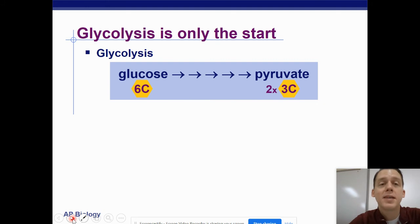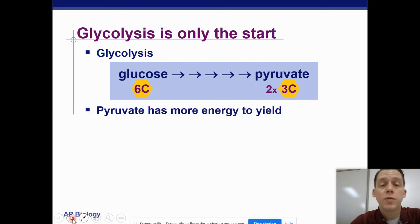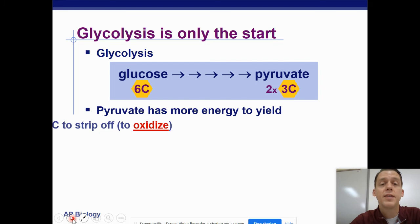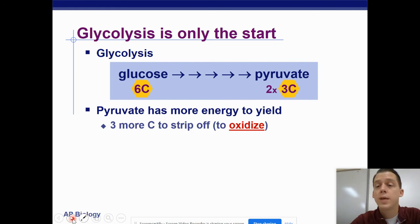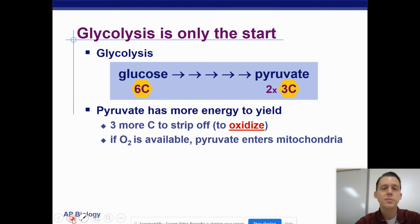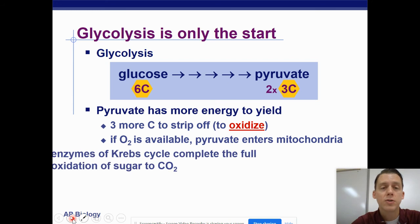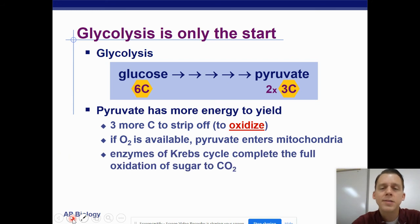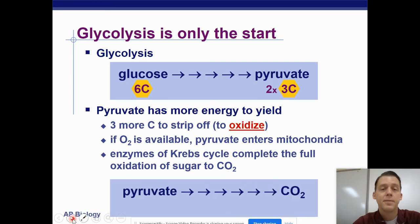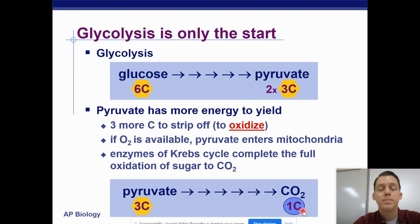Glycolysis has basically turned glucose into pyruvate — two of them — but we didn't do anything with the pyruvate yet. Pyruvate has chemical energy that it can yield; we have three more carbons that we can oxidize. If oxygen is available, pyruvate is going to enter the mitochondria and the enzymes of the Krebs cycle are going to break pyruvate all the way down to carbon dioxide. So we've got two three-carbon compounds being broken down to the one-carbon CO2 — that's complete oxidation of pyruvate.